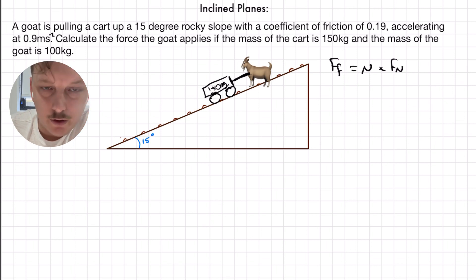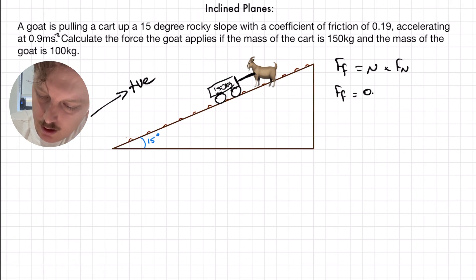First thing I'm going to do is decide on my convention. So, in this case here, up the slope is going to be positive again. And while I'm working with this friction calculation, I might as well finish it off. Mu is 0.19 and the force normal is mg cosine 15. Which means we have a frictional force of 449.6 newtons.